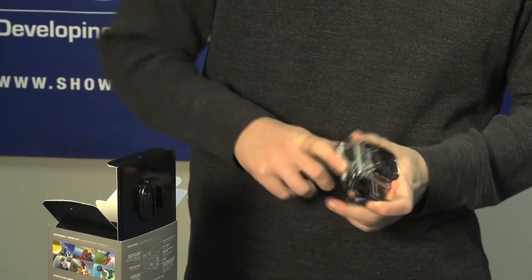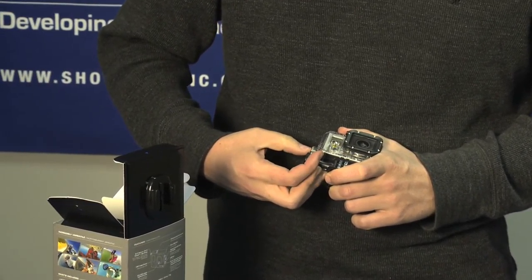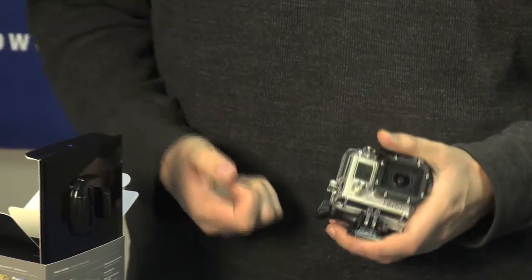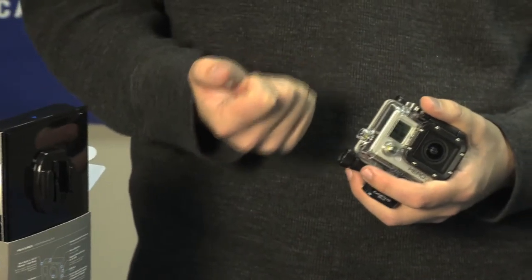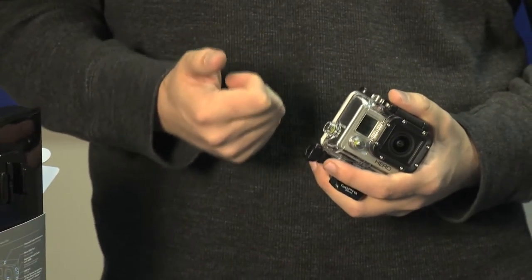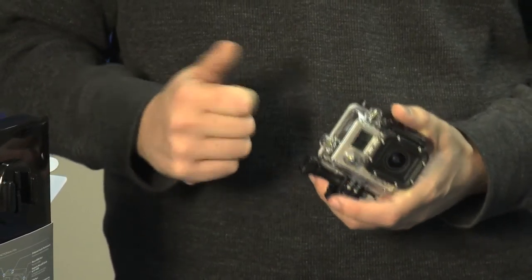On the side here, you've got the Wi-Fi button, which you can push that in, and you can turn the Wi-Fi modes on and off. It's got a little waterproof, durable Wi-Fi remote that you can just push the button and record. That one remote can control up to 50 different cameras.